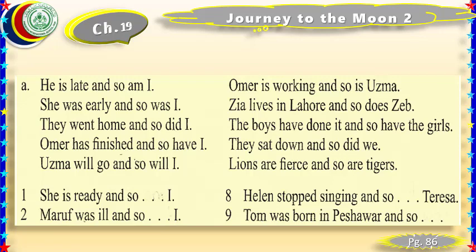The next exercise deals with the structure 'so am I.' For example: 'He is late and so am I.' 'She is early and so am I.' 'They went home and so did I.' Notice: if the verb is 'was,' you write 'so was I'; if it is the second form like 'went,' you write 'so did I'; if it is 'has,' you write 'so have I'; if it is 'will,' you write 'so will I.'